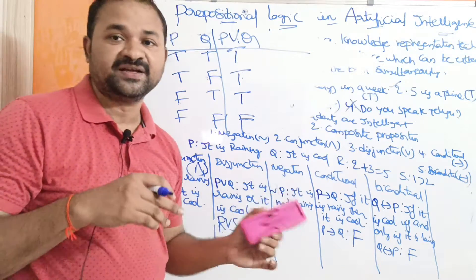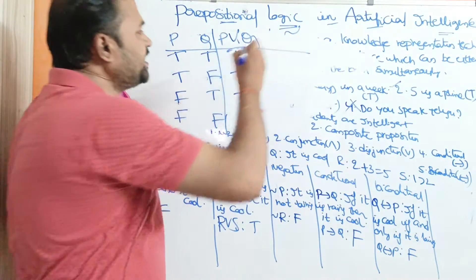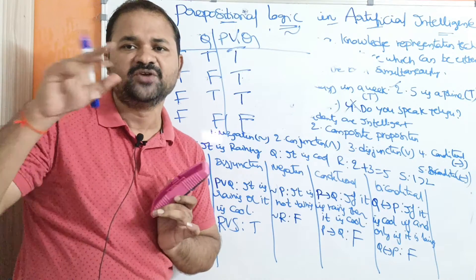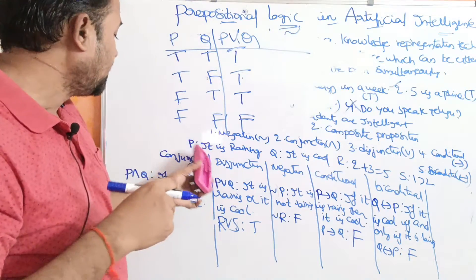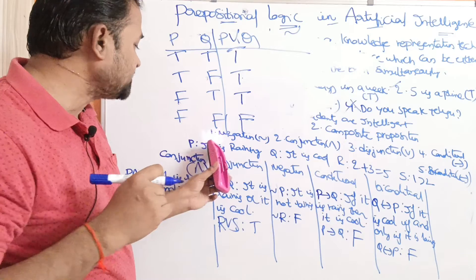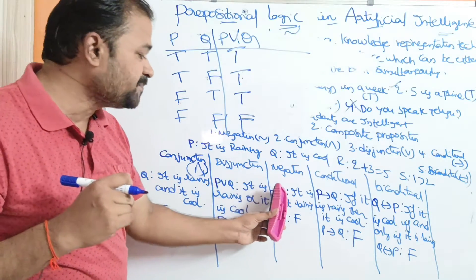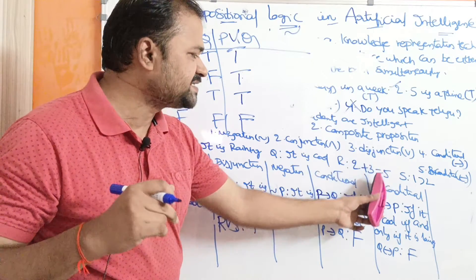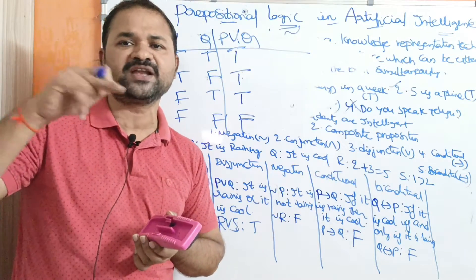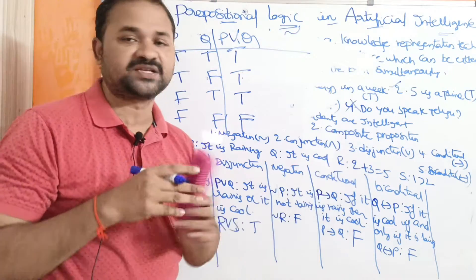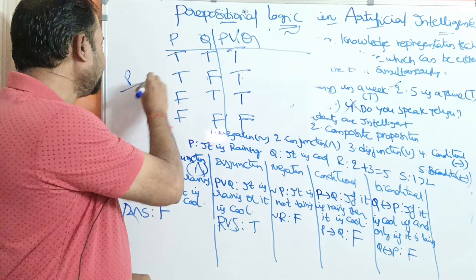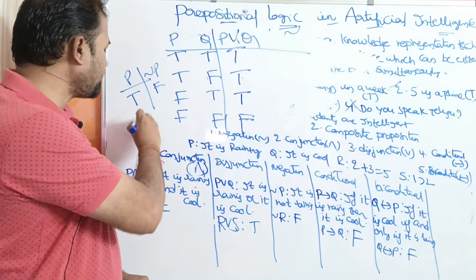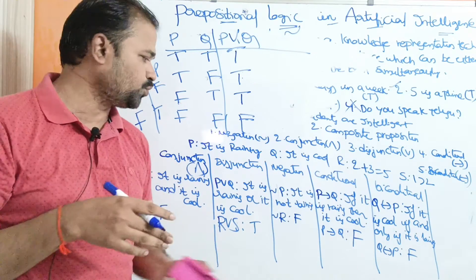Now let us see negation, which is denoted by the NOT symbol (¬). Negation can be applied to a single proposition — two propositions are not needed. For example, P = 'It is raining,' so negation P (¬P) = 'It is not raining.' For R = '2 + 3 = 5,' the truth value is true, so negation R is false. If a proposition is true, then its negation returns false; if the proposition is false, then its negation returns true.